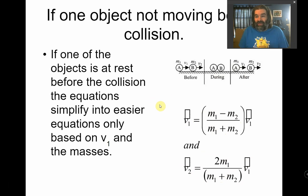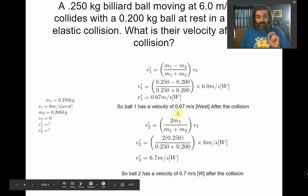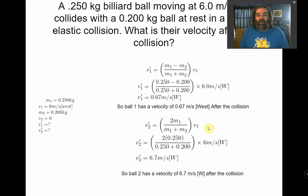based on the velocity of the first ball and the masses. So if you get a situation where one ball is hitting another ball at rest and they're elastic, it's an elastic collision, which I will specifically say in the question, you can use these two equations. So here's an example. If you've got a billiard ball moving at 6 meters per second, colliding with another ball at rest, a slightly lighter ball at rest in an elastic collision, what's their velocity?